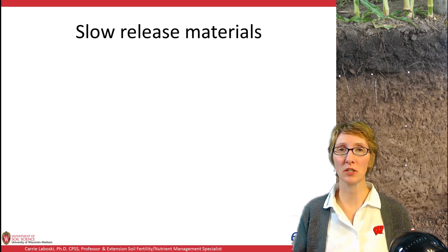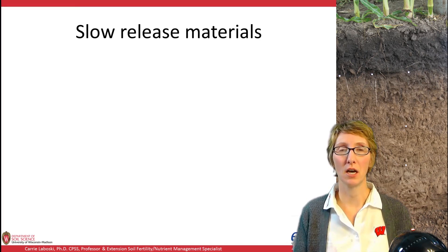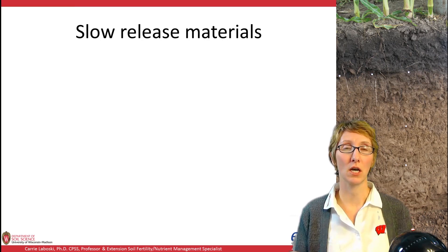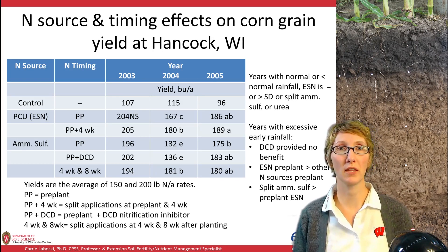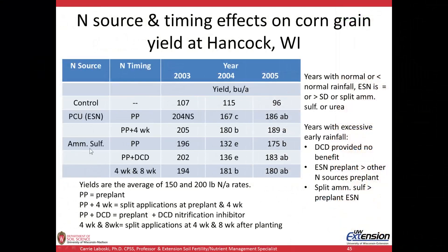That moves us to slow release materials. Products like ESN are poly-coated materials that rely on the coat getting warm with adequate moisture to become porous, allowing moisture in to dissolve the material and release it. Sulfur-coated urea would be another example of a slow-release material.